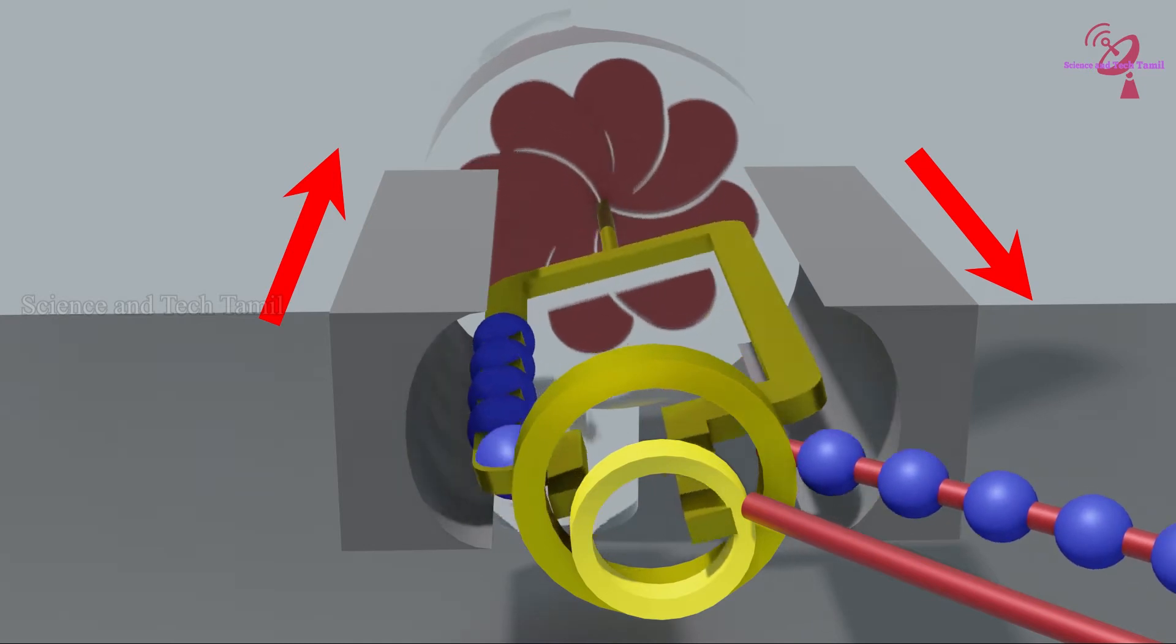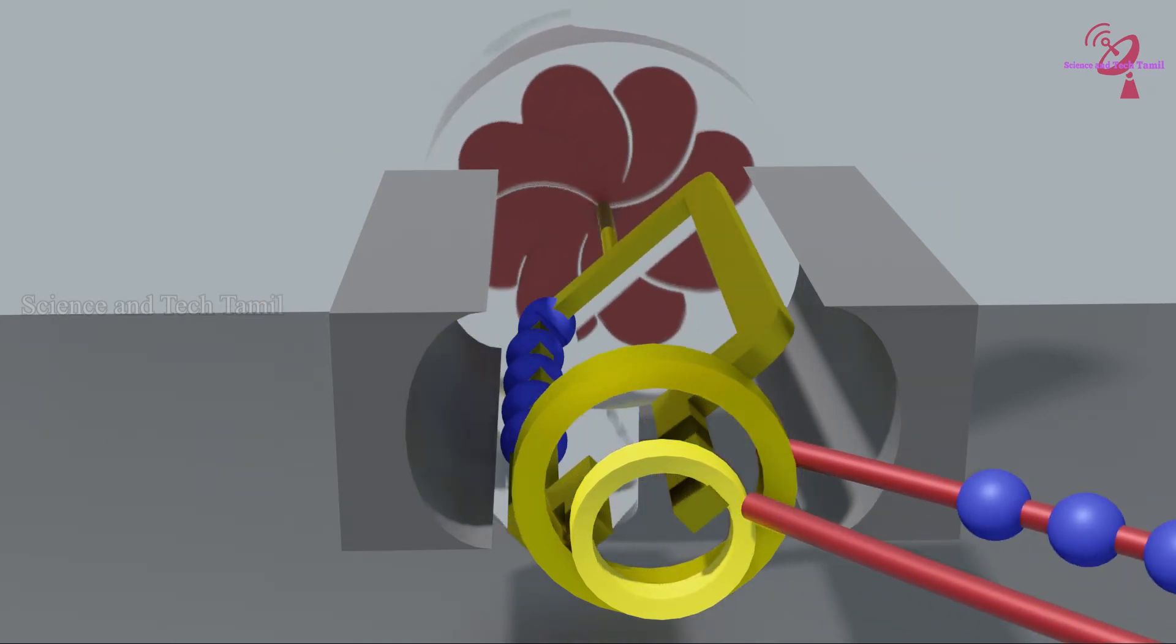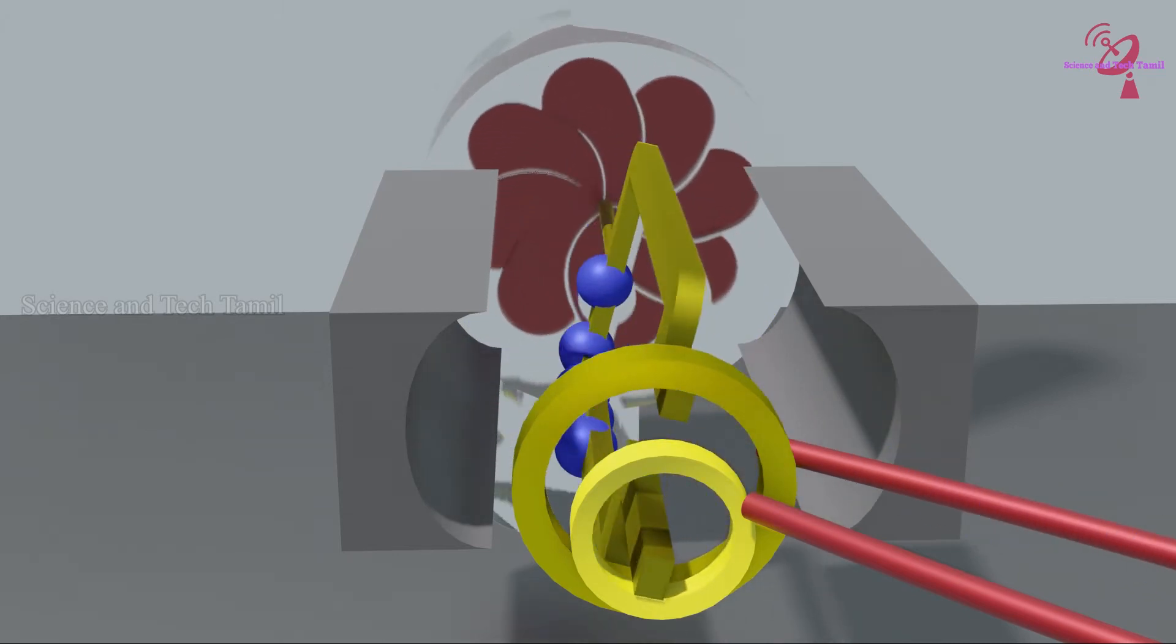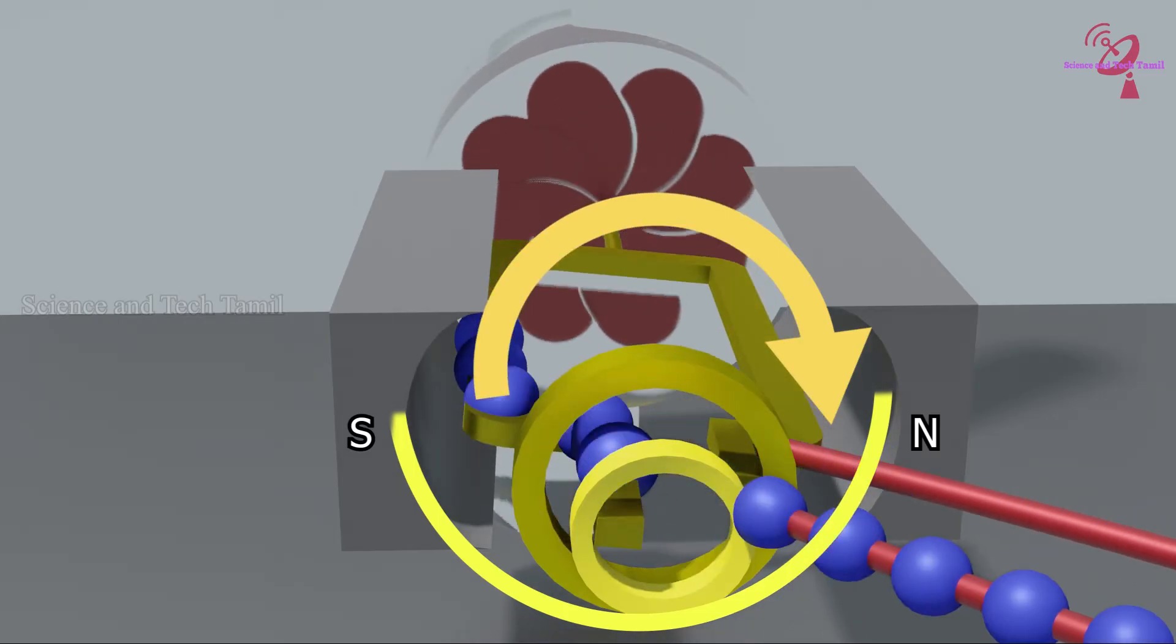After completion of a half revolution, the electron flow reverses. For example, electrons flow in one direction until the north side coil moves to south and the south side moves to north.